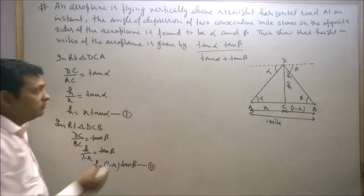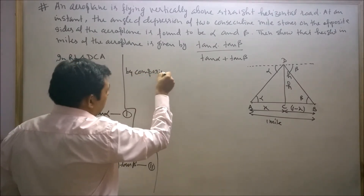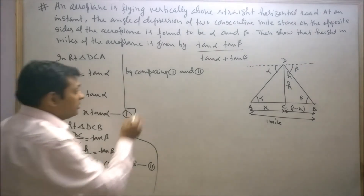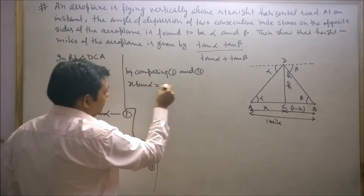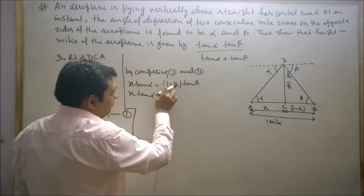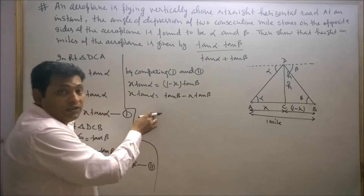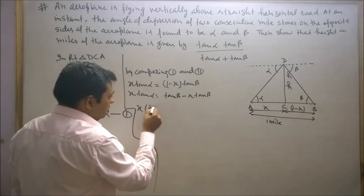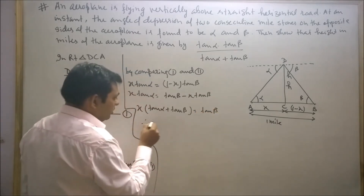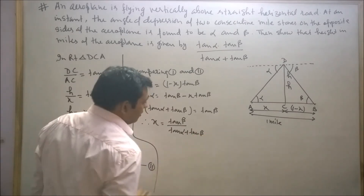By comparing the first and second equations: X times tan alpha equals 1 minus X times tan beta. Transposing X times tan beta to the left hand side and taking X as common: X times tan alpha plus tan beta equals tan beta. Therefore, X equals tan beta upon tan alpha plus tan beta.